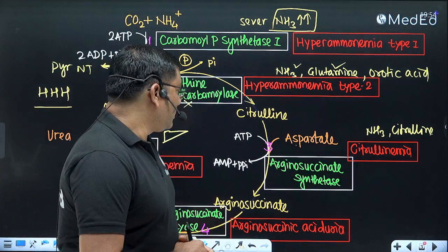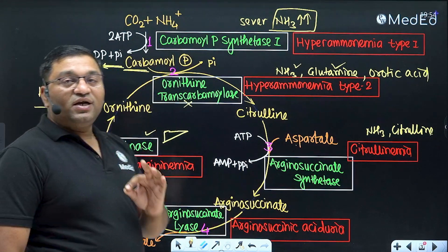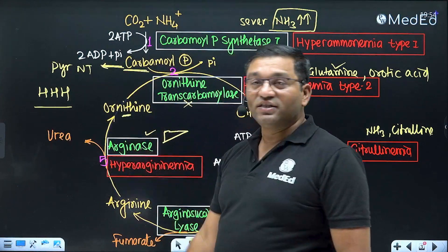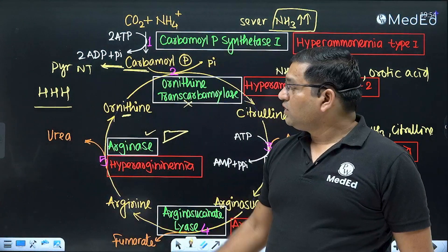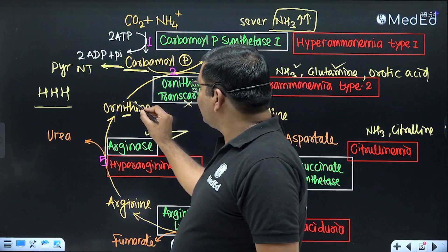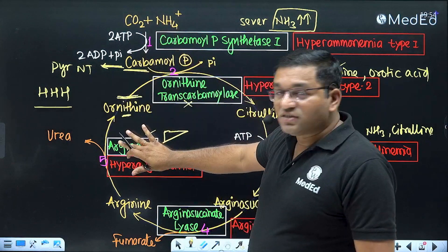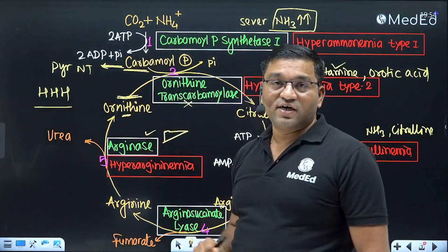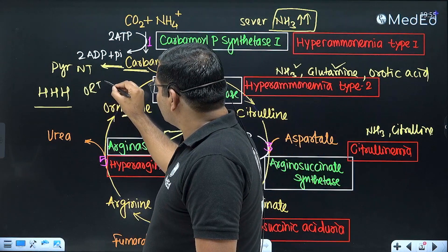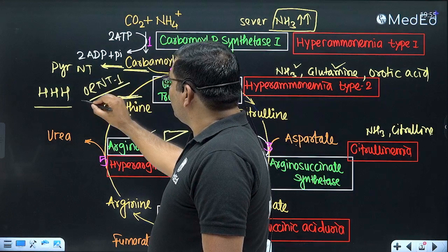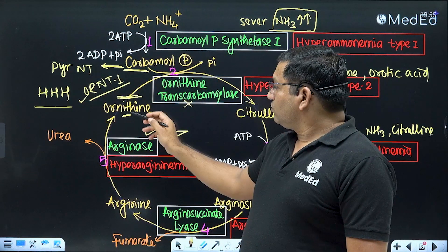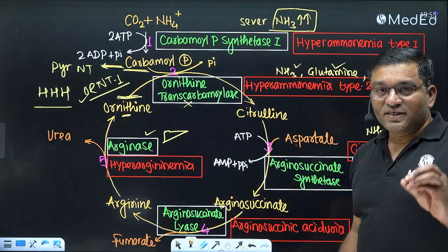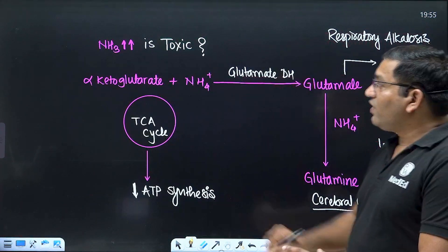Apart from the five disorders, there is a sixth: Triple H syndrome — hyperammonemia (increased NH3), hyperornithinemia (increased ornithine), and homocitrullinuria. This is due to a defect in the transport of ornithine. Ornithine generated in the cytosol needs to be transported into the mitochondria via ornithine transporter 1 (ORNT1). ORNT1 mutation causes Triple H syndrome: ornithine accumulates causing hyperornithinemia, along with hyperammonemia and homocitrullinuria.